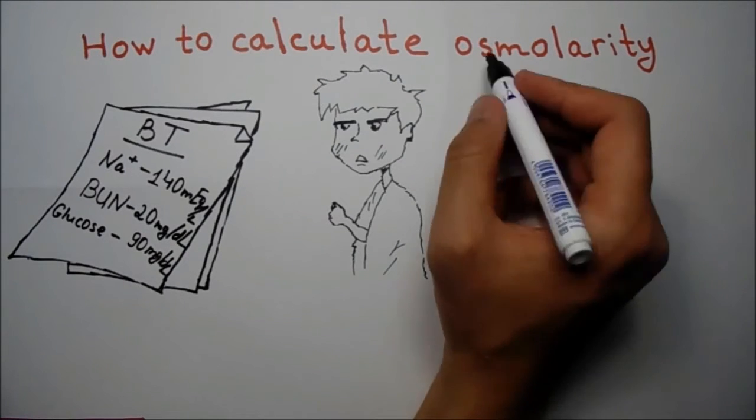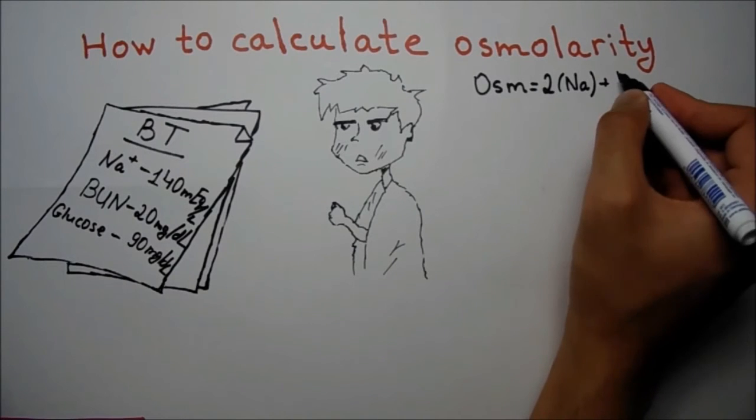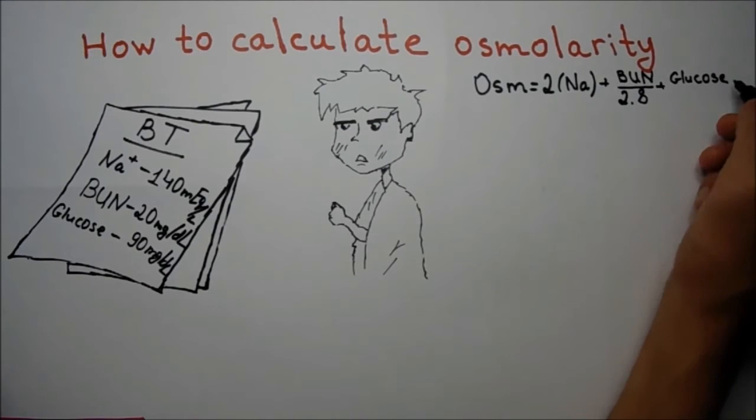Osmolarity equals 2 times sodium plus blood urea nitrogen divided by 2.8 plus glucose divided by 18.